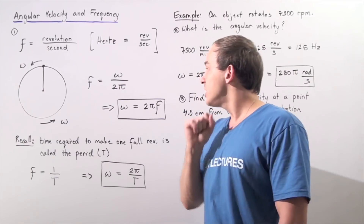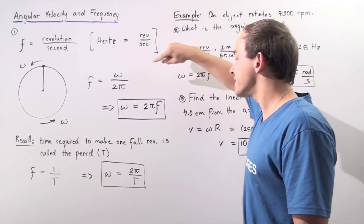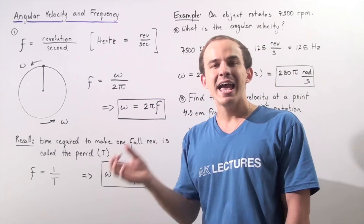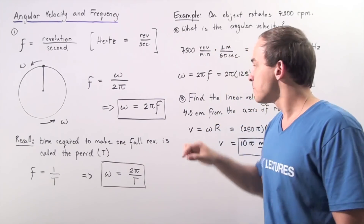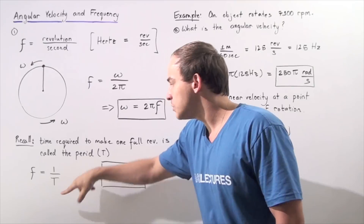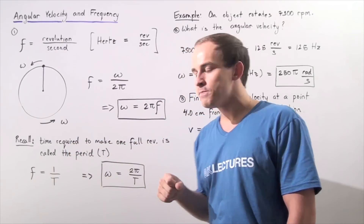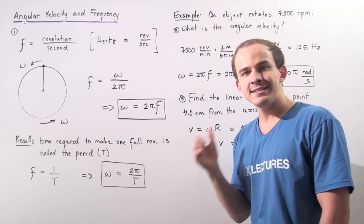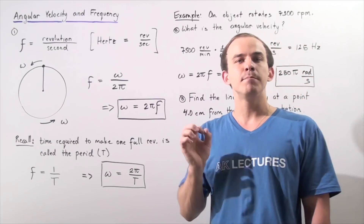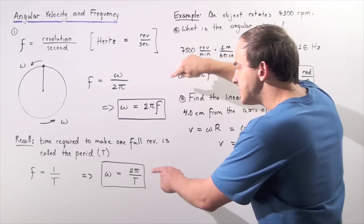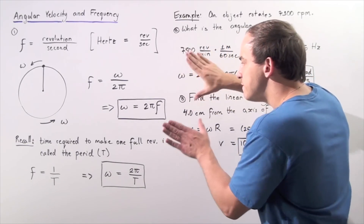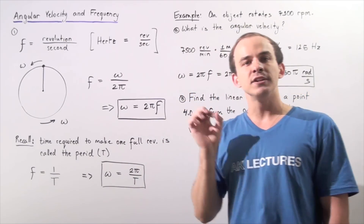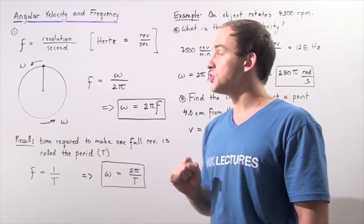We can also represent our angular velocity in terms of pi and our period. We simply replace frequency with one over period, and we see that angular velocity is equal to two pi divided by the period. These two equations can come in very handy when we want to calculate the angular velocity knowing the frequency.